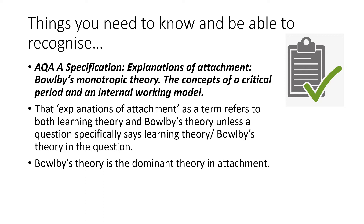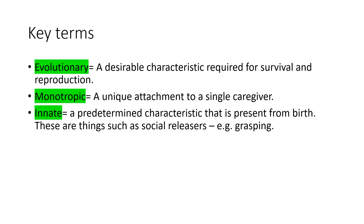Bowlby's Theory is the dominant theory in attachment. Some key terms to understand: 'evolutionary' refers to a desirable characteristic required for survival and reproduction. 'Monotropic' means a unique attachment to a single caregiver, ordinarily the primary attachment figure. 'Innate' is something predetermined, a characteristic present from birth — this includes social releases such as grasping or cooing, behaviours a baby does naturally.